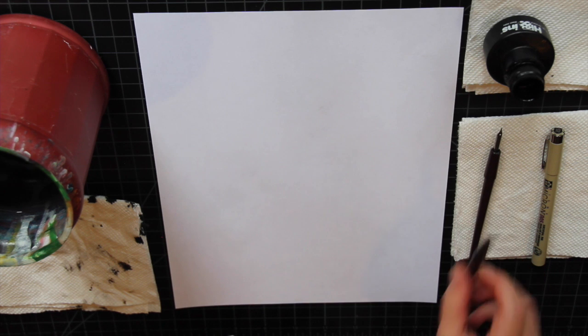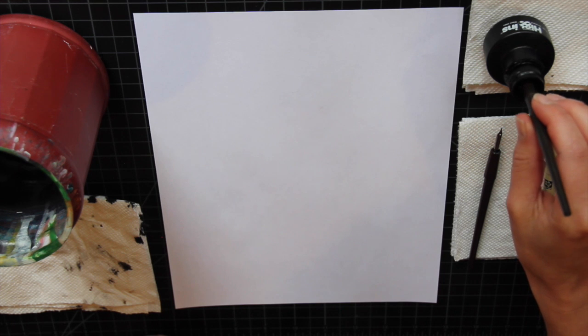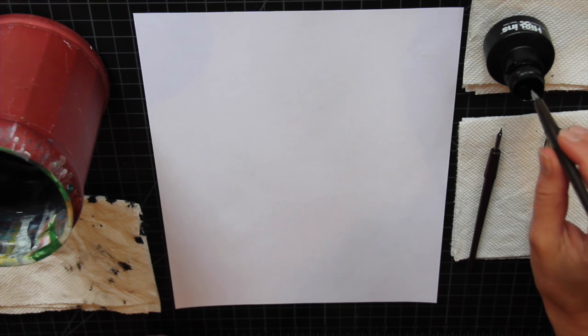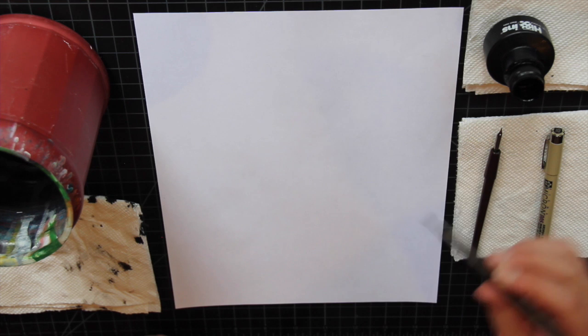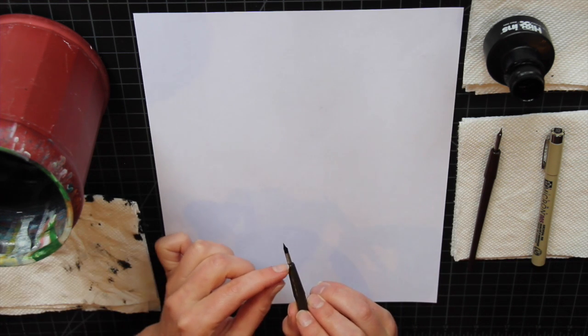So I'm going to go ahead and use the more flexible nib, and the first thing I'm going to do is dip it into the ink. Remember that you want to dip the pen in just deep enough that it goes over that little opening.